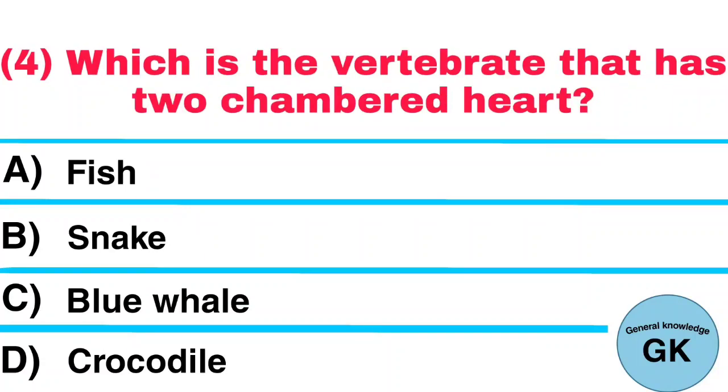Question number 4. Which is the vertebrae that has two chambered heart? A. Fish. B. Snake. C. Blue Whale. D. Crocodile. Answer: Fish.